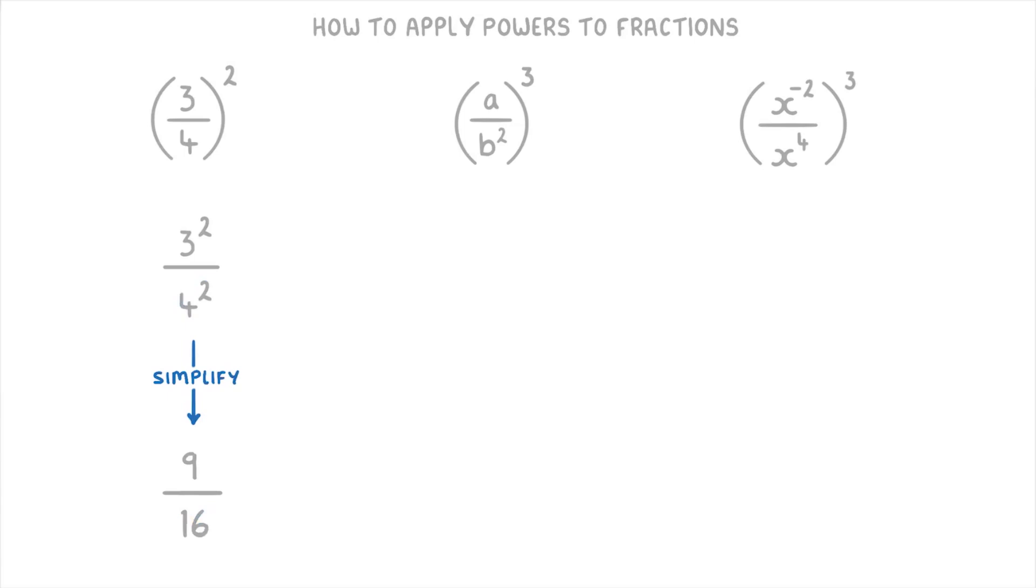For this next one, where we have a divided by b squared all to the power of 3, we just need to take this power of 3 and apply it to the top and the bottom individually.